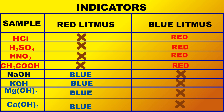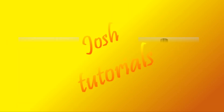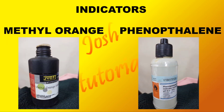From the above experiment, we can see all acids change blue litmus to red whereas bases turn red litmus to blue. In addition to the above indicators, we also use synthetic indicators such as methyl orange and phenolphthalein. Methyl orange appears to be a slight orange in color and phenolphthalein is colorless.